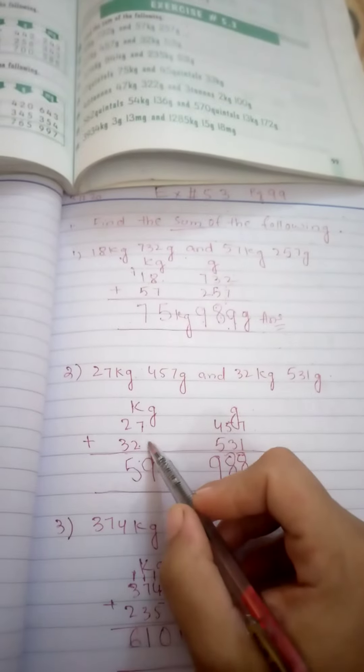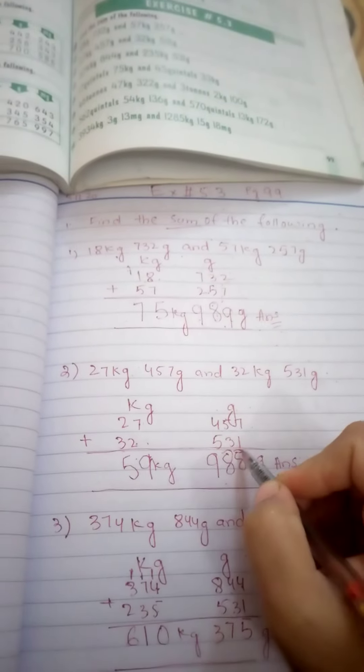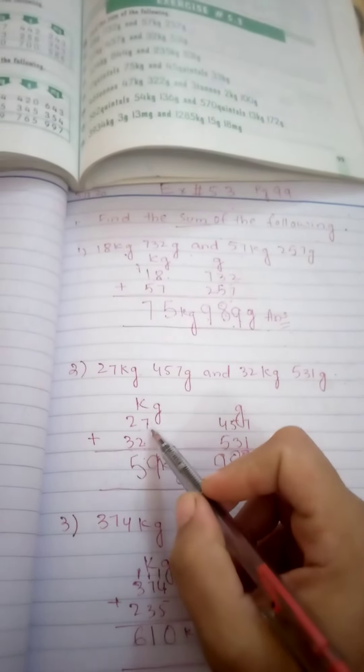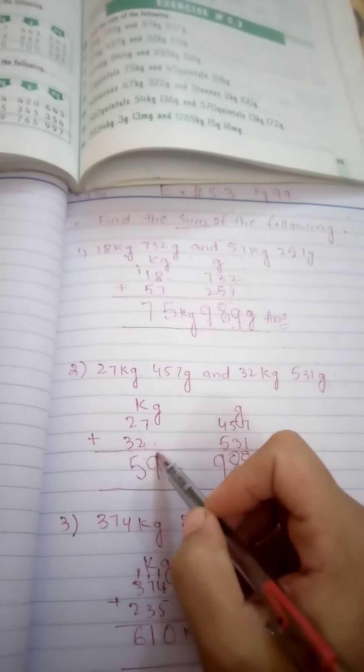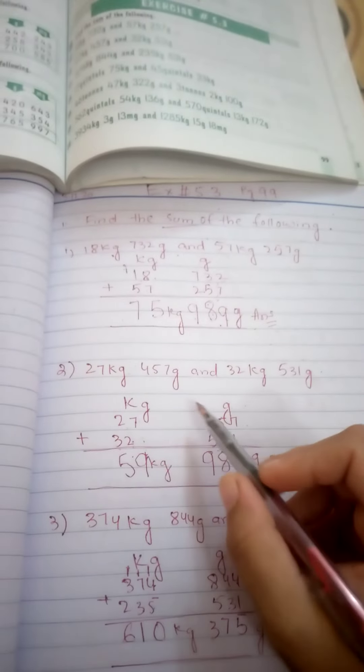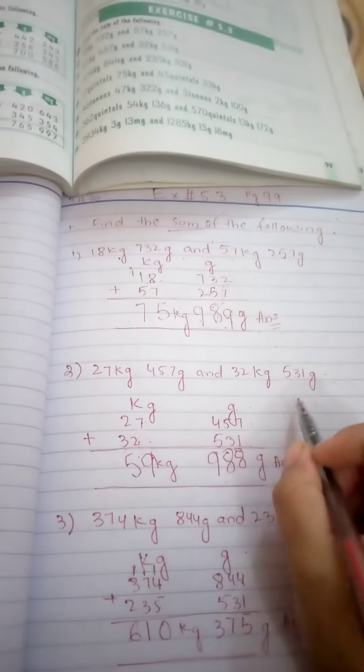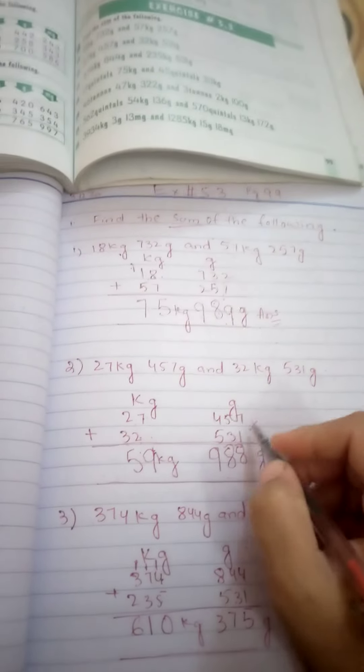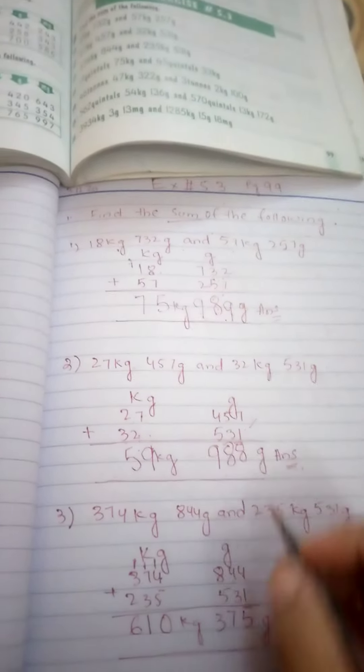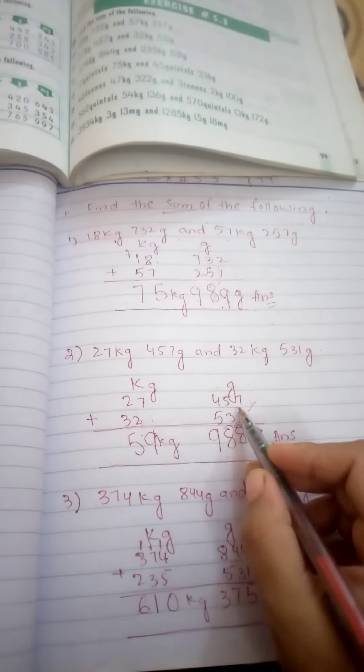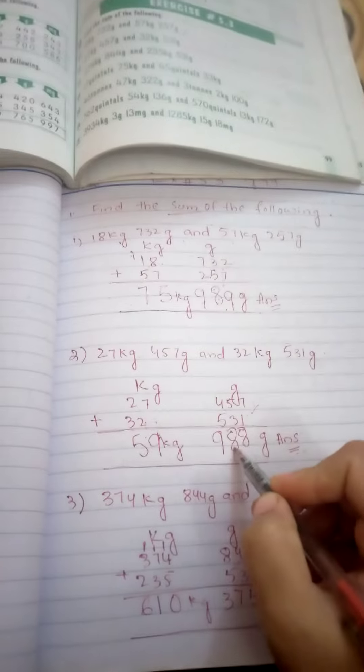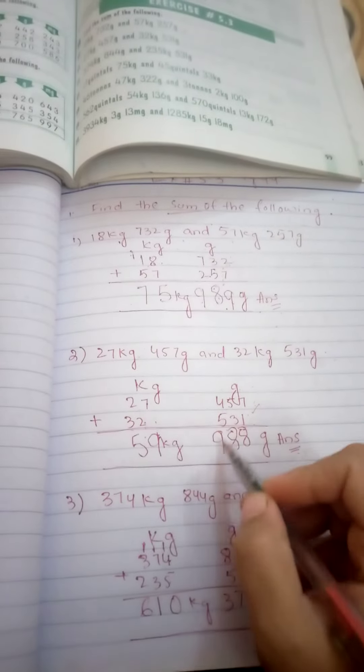We write the kg in the kg column and the grams in the grams column. We have 27 kg and 32 kg, so we write 27 and 32 in the kg column. We have 457 grams and 531 grams in the gram column. Again, we start addition from the right hand side. 7 plus 1 is 8, 5 plus 3 is 8, 4 plus 5 is 9.